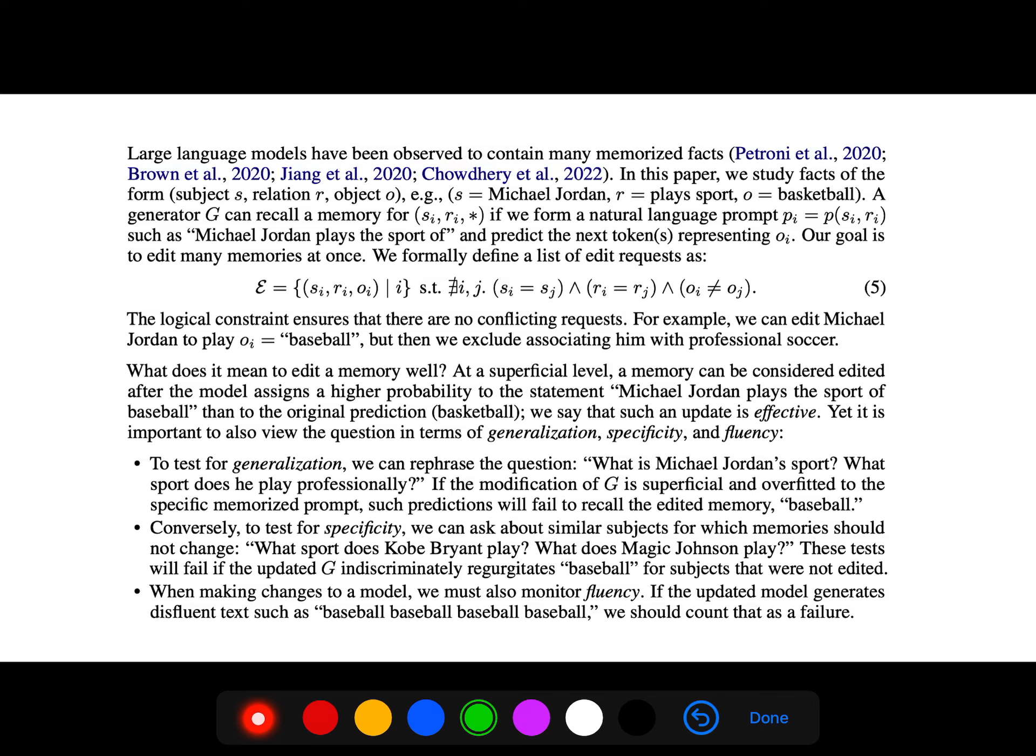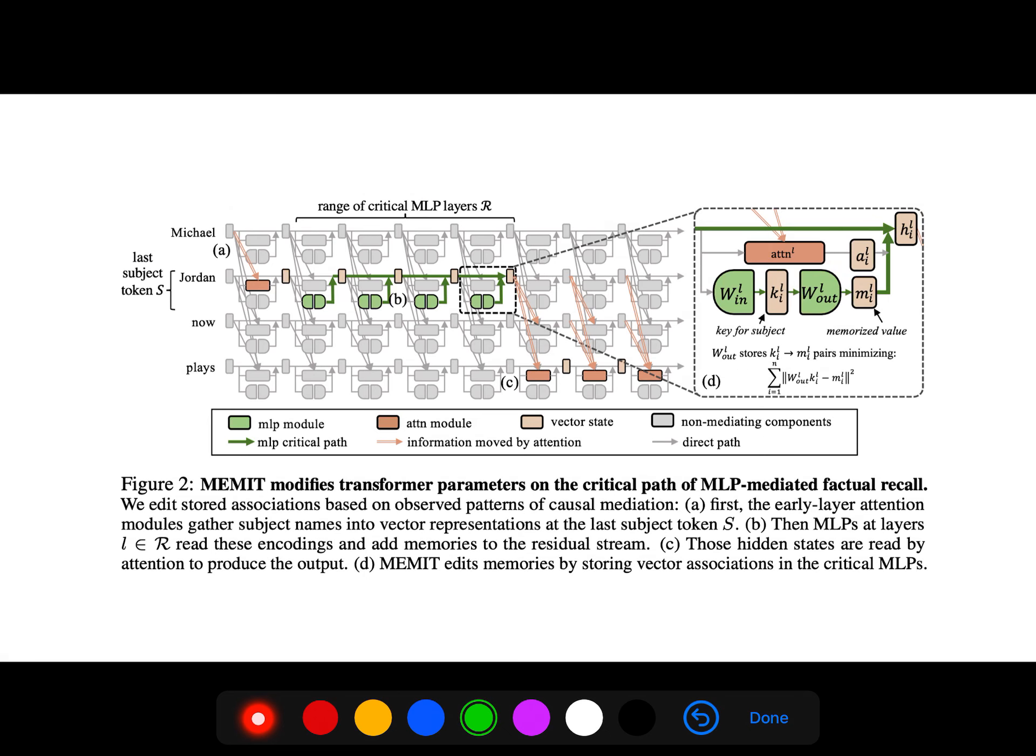We formally define a list of edit requests. The logical constraint ensures that there are no conflicting requests. For example, we can edit Michael Jordan to play basketball, but then we exclude associating him with professional soccer. This is the architecture we edit for MEMIT and we edit stored associations based on observed patterns of causal mediation.